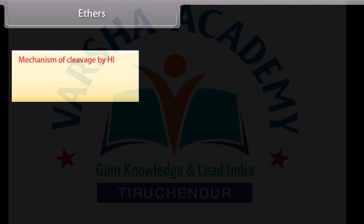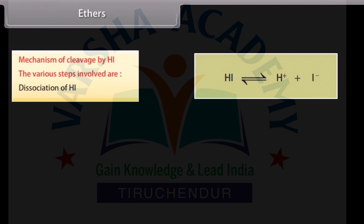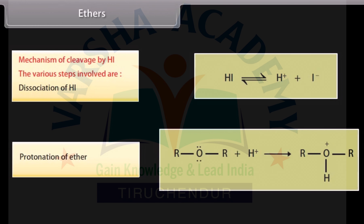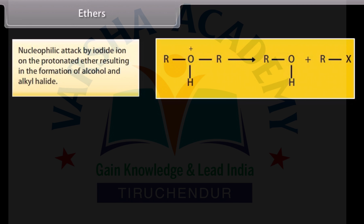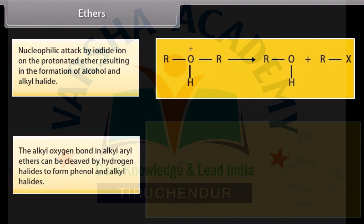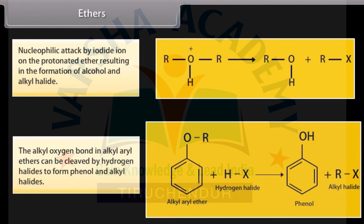Mechanism of cleavage by HI: the steps involved are dissociation of HI, protonation of the ether, then nucleophilic attack by the iodide ion on the protonated ether, resulting in the formation of alcohol and alkyl halide. The alkyl-oxygen bond in alkyl aryl ethers can be cleaved by hydrogen halides to form phenol and alkyl halides.